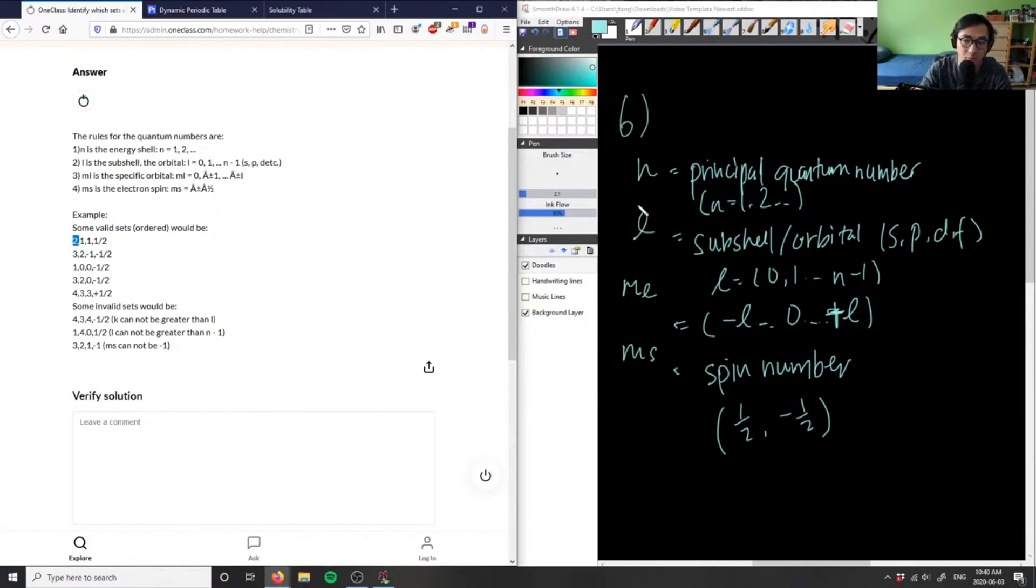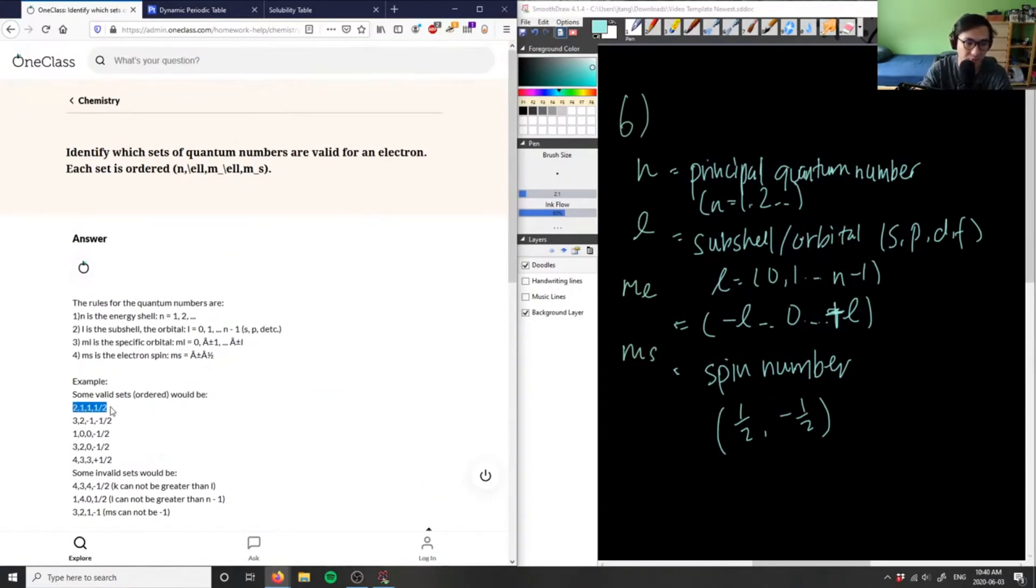One here will be our subshell. One can also be a magnetic quantum number, and the half is going to be a spin number, which is good. So checking the first example, the solution is correct. So these are all valid sets for a quantum number here.